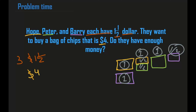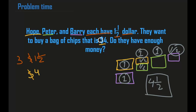Adding it all up: one dollar plus one dollar is two dollars, plus another dollar is three dollars, plus another dollar is four dollars, plus a half makes four and a half. Together, Hope, Peter, and Barry have four and a half dollars. The bag of chips costs four dollars, so do they have enough money? Yes — because four and a half is more than four. They have enough money.